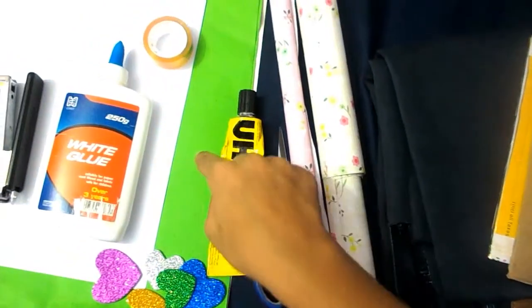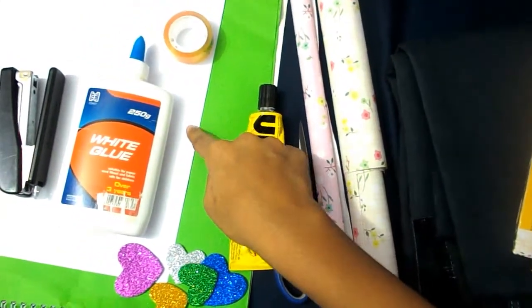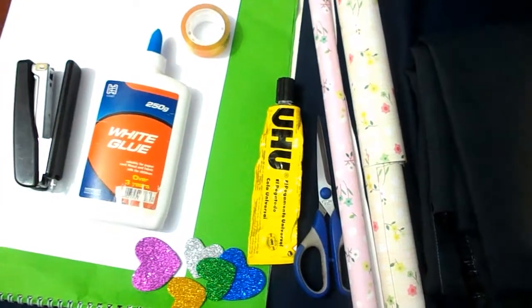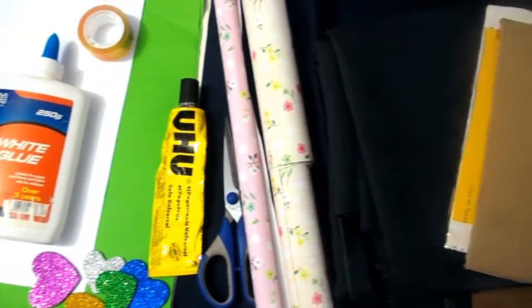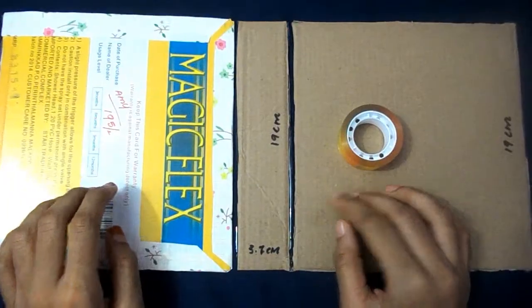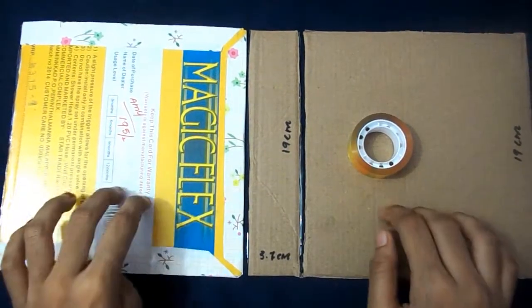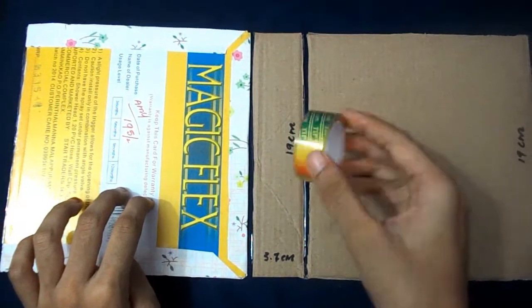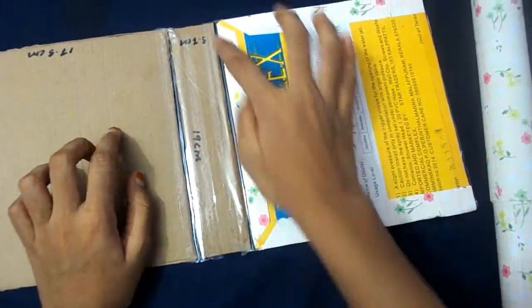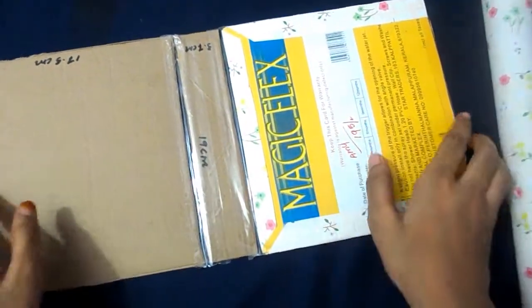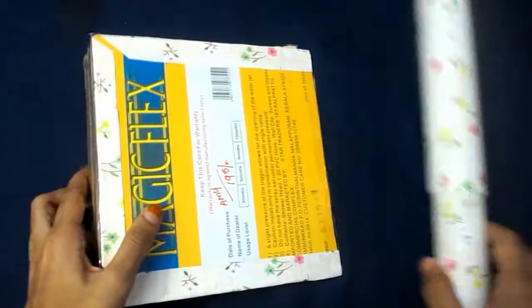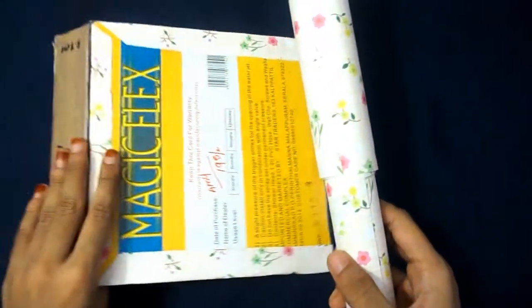Let's start now. Take the cardboard and keep the small one in the middle and the other two on the ends. And now we need to join this cardboard using the tape. I have joined the cardboard using the tape. Now it looks like a file. Now we need to wrap it using the wrapping paper to look more beautiful.